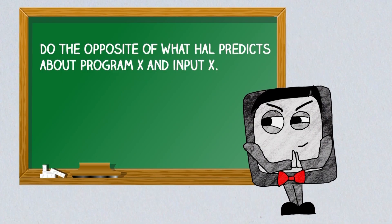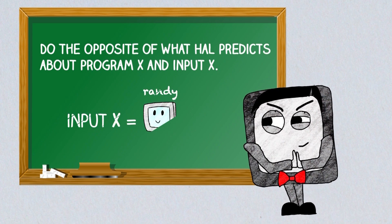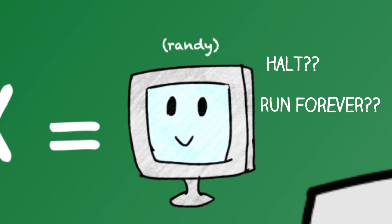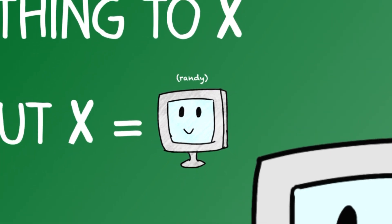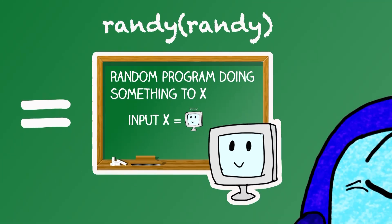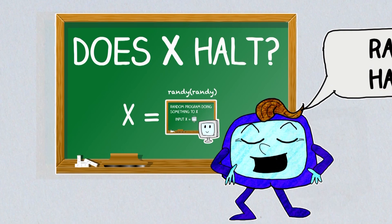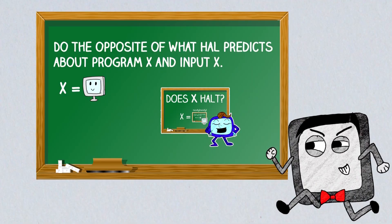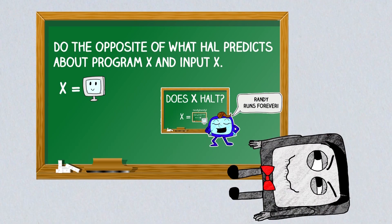So let's see what happens when Barry is given a random program — Randy — as input. Barry does the opposite of Hal, so he first needs to know what Hal would say about Randy: does he halt or run forever? So he runs Hal with program and input Randy. If Hal returns 'Randy halts,' Barry runs forever. And if Hal returns 'Randy runs forever,' Barry halts.